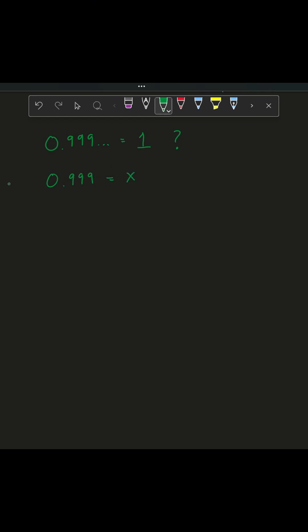So what we're going to do here now, let's multiply both sides by 10. So on the right we'll have 10x, and on the left we multiply by 10, we just move that decimal over. So now we've got 9.999 repeating.